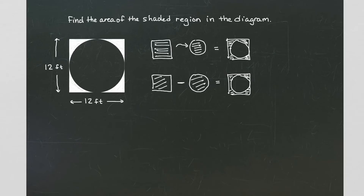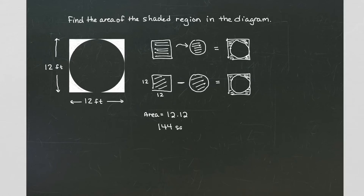The first thing is we have to know what the area of a square is. The area of a square is the same thing as the area of a rectangle — it's the length times the width, or the base times the height. In our particular example, we have a square that's 12 by 12, so the area for the square is going to be 12 times 12, or 144 square units.